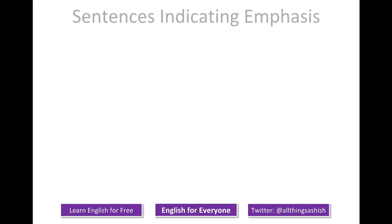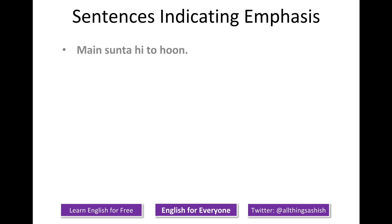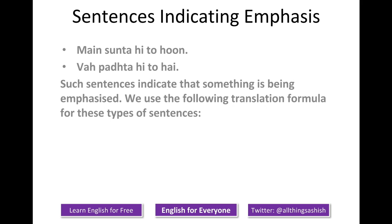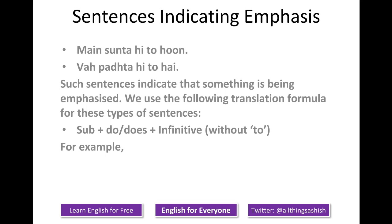Let's look at sentences indicating emphasis. Such sentences indicate that something is being emphasized. The formula for these types of sentences is: subject plus 'do' or 'does' plus infinitive — without 'to', mind you. For example: I do listen. He does read.